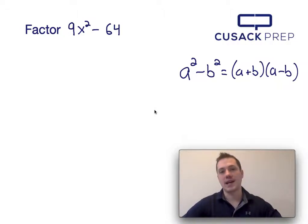Well, the first thing I noticed about 9x squared minus 64 is both 9x squared and 64 are perfect squares. Because these are both perfect squares, and we're taking the difference of them, we can factor this using the difference of squares equation.